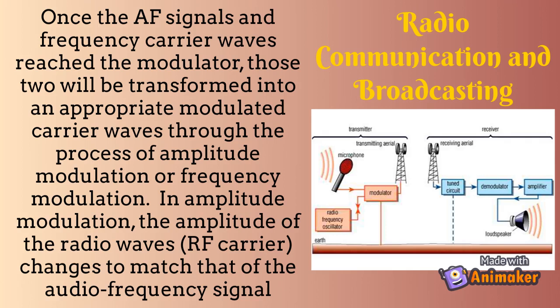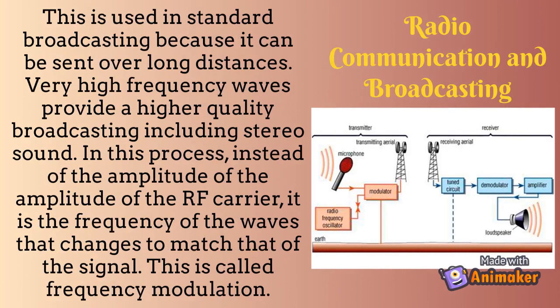This transformation is done through the process of amplitude modulation (AM) or frequency modulation (FM). In amplitude modulation, the amplitude of the RF carrier changes to match that of the audio frequency signal. This is used in standard broadcasting because it can be sent over long distances. Very high frequency waves provide higher quality broadcasting including stereo sound. In frequency modulation, instead of the amplitude, it is the frequency of the RF carrier that changes to match that of the signal.